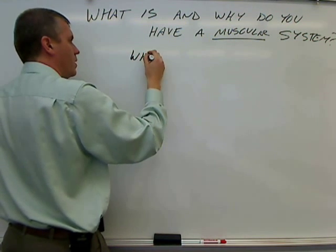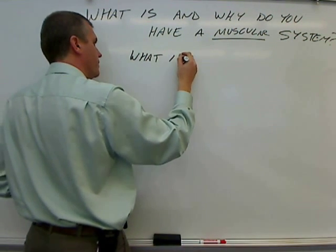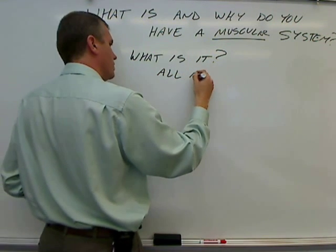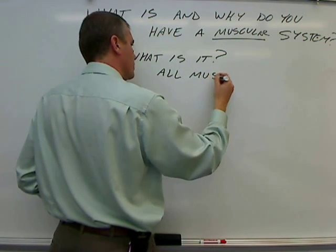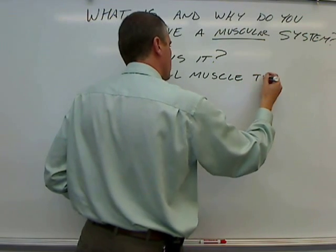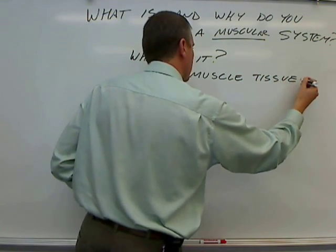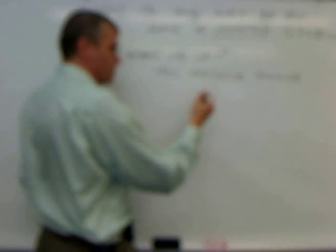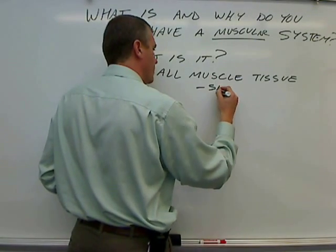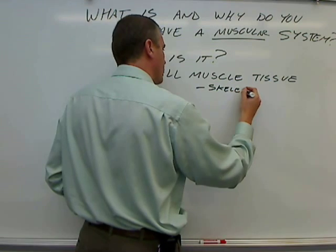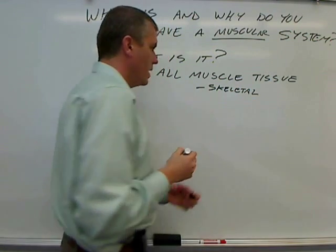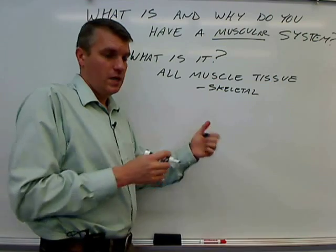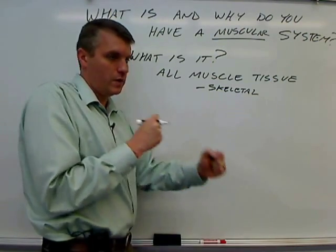So first of all, what is it? It's all muscle tissue, including the three major types of muscle tissue. The first is skeletal muscle, which is usually attached to bones — those are the muscles that help us move the bones.